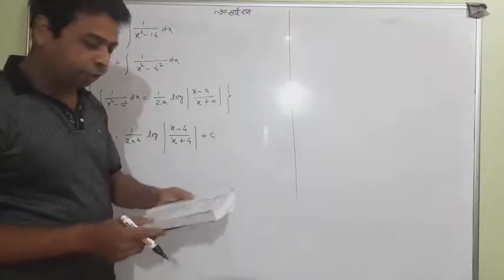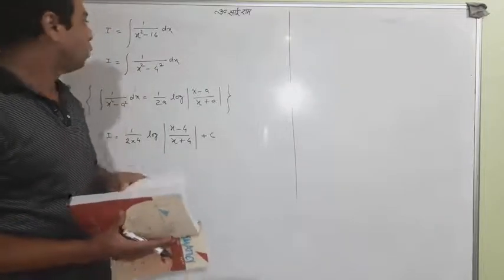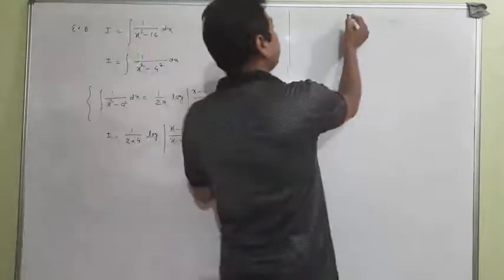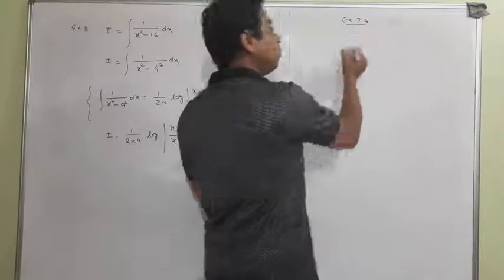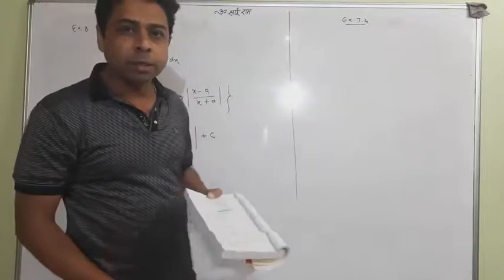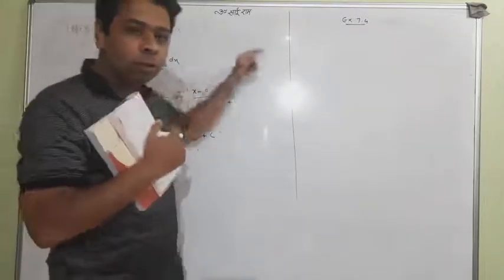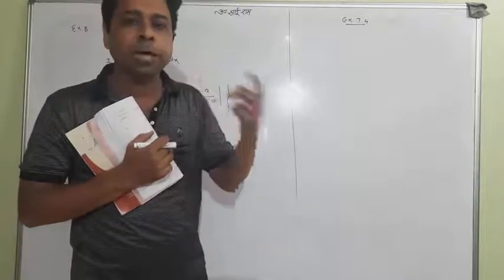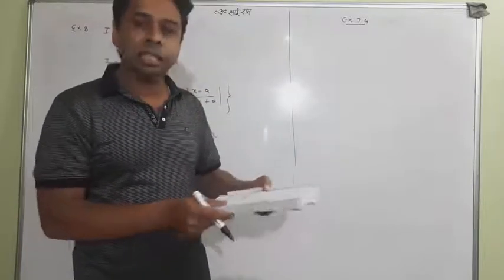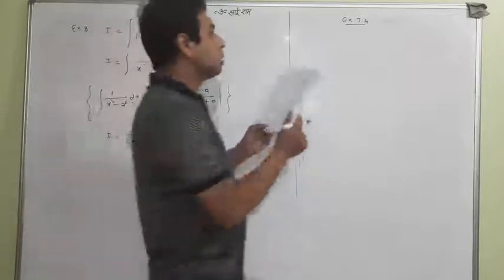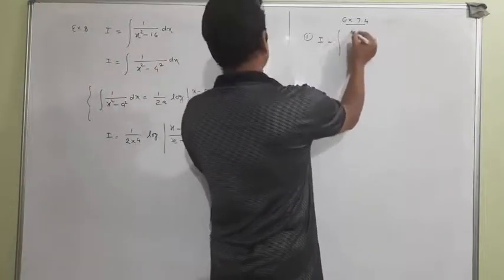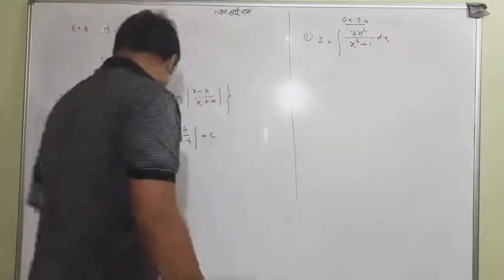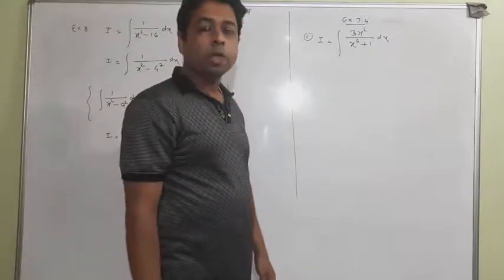Let me take one more question from Exercise 7.4. Students, don't think about why I skip some examples — I know the same kind of questions and I'll return to a few I left. Question number one: it is 3x squared upon x to the power 6 plus 1.